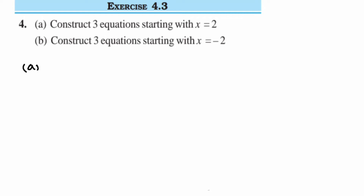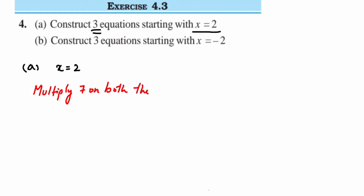Starting with x = 2, I have to form three different equations. For the first one, I'm going to simply multiply both sides by a certain number. Let me multiply by 7 on both sides of the equation. That gives us 7x = 14. This is my first equation.